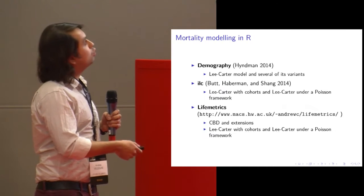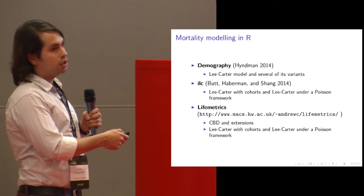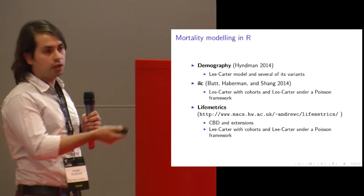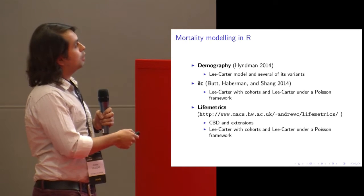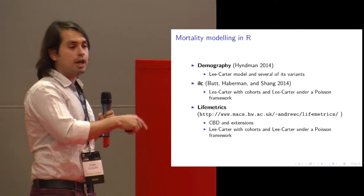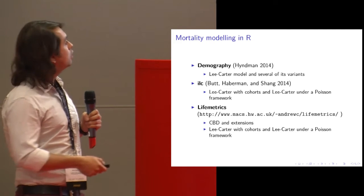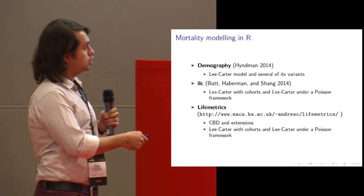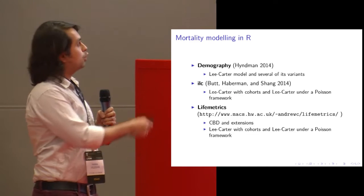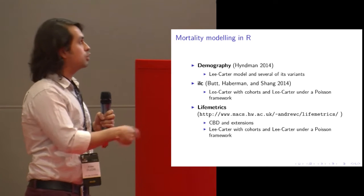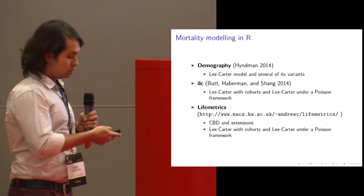There are also several packages for doing mortality modeling in R. The most famous one is the demography package, which implements the Lee-Carter model and several of its variants. You also have the ILC package, which implements Lee-Carter with cohorts in a Poisson framework, and the LifeMetrics functions, which implement some CBD extensions. Unfortunately, the LifeMetrics functions are not a package available on CRAN, so it's rather difficult to use them.